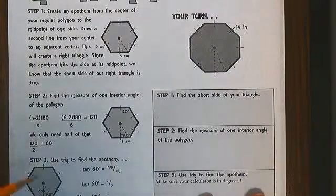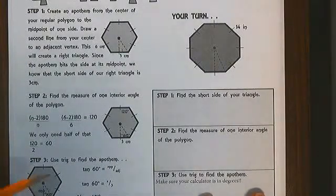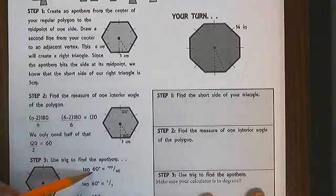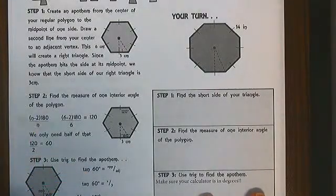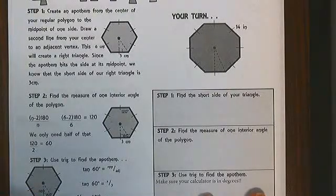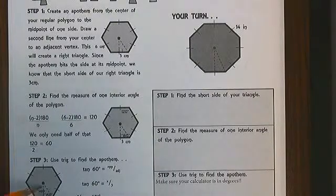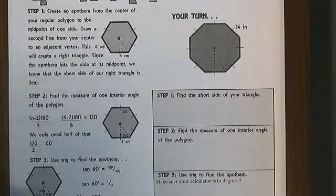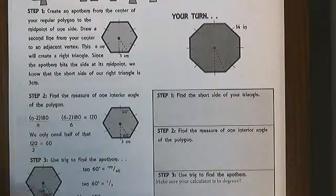Because we can use the tangent of 60 degrees, or because it's a 30-60 right triangle, we know that this side is 3 times the square root of 3, and this side is, this length is 6.